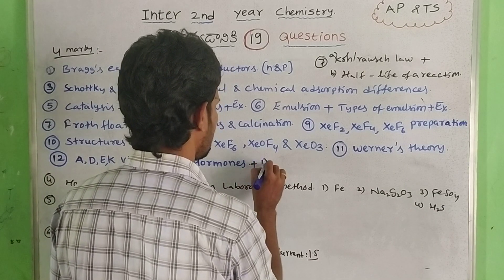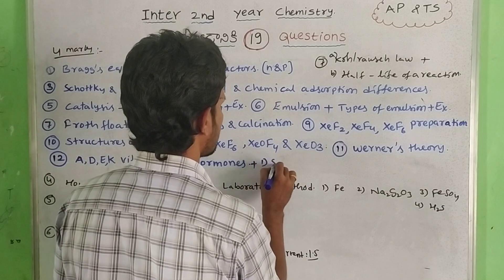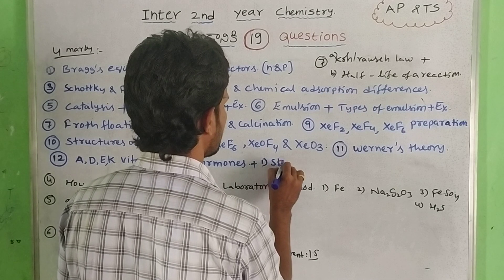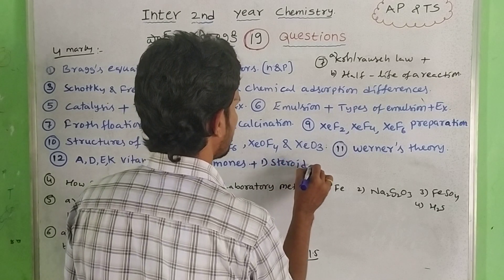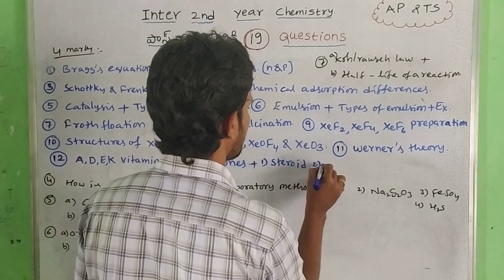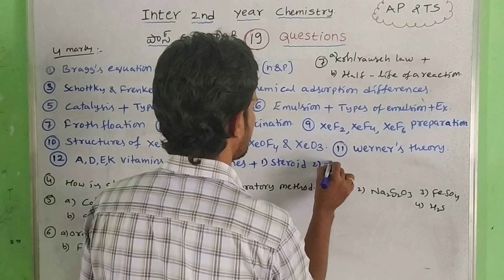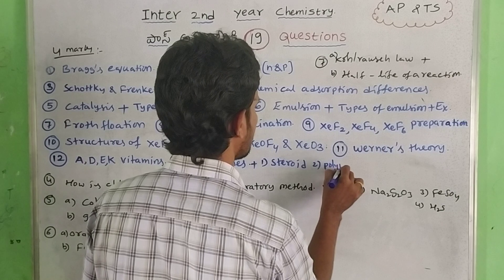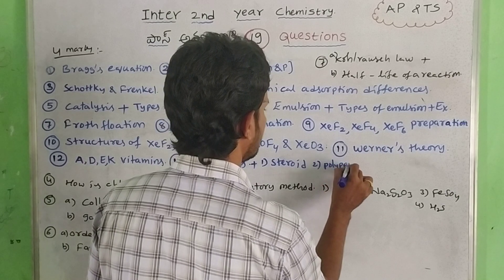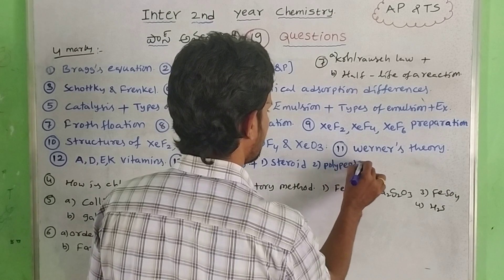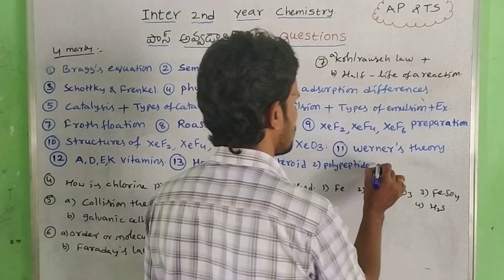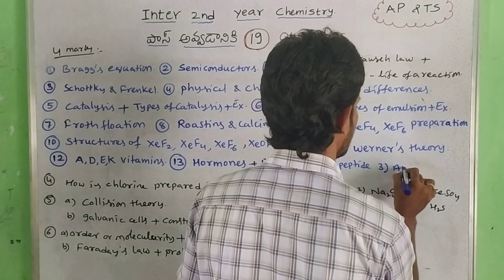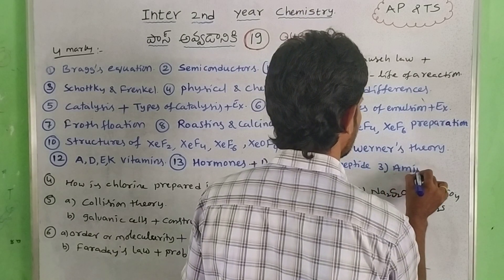First one: steroid hormones. Second one: polypeptide hormones plus amino acid derivatives.